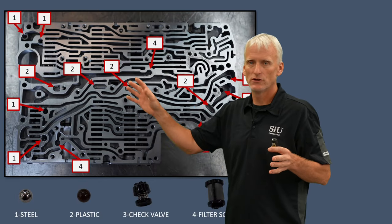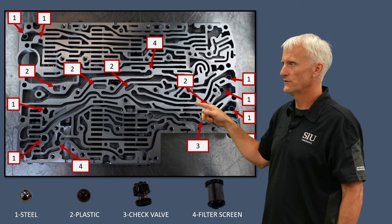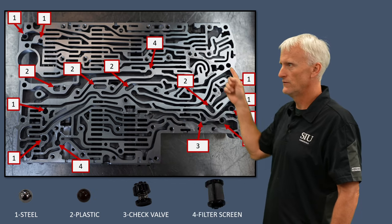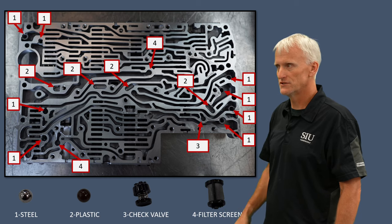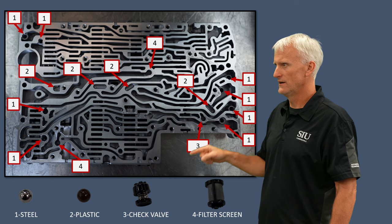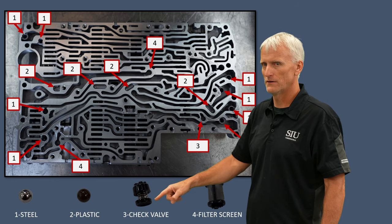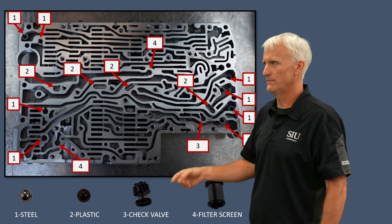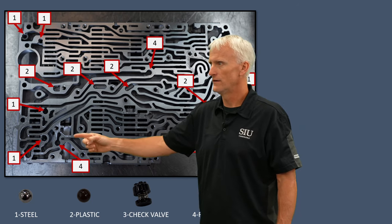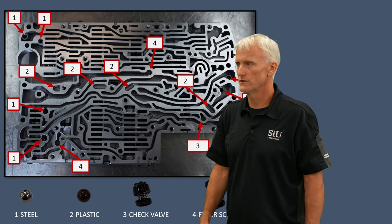This image shows all the check balls in the valve body. Marked with two indicators are plastic check balls — there are four of them. Marked with one indicator are steel check balls — there are eight of those, four on each side. There's also a plastic check valve that fits in a specific spot with the flat part facing up towards the spacer plate. And number four markers indicate little filter screens that lead to the shift solenoids and torque converter clutch solenoids.